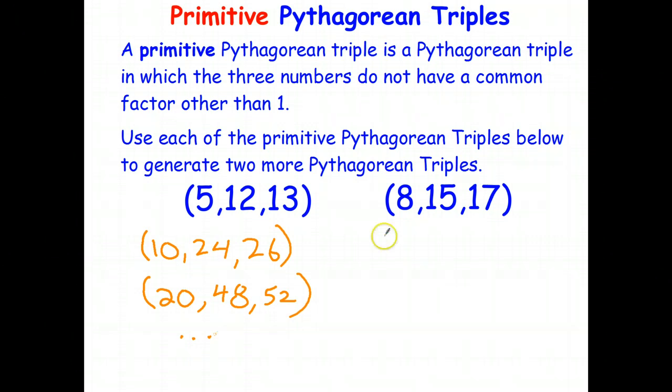8, 15, 17. Again, the easy one is doubling: 16, 30, 34. And I might multiply it by 10. So that just gives me 80, 150, 170. So again, I can multiply the three numbers in the Pythagorean triple by any natural number, and that gives me a new Pythagorean triple.